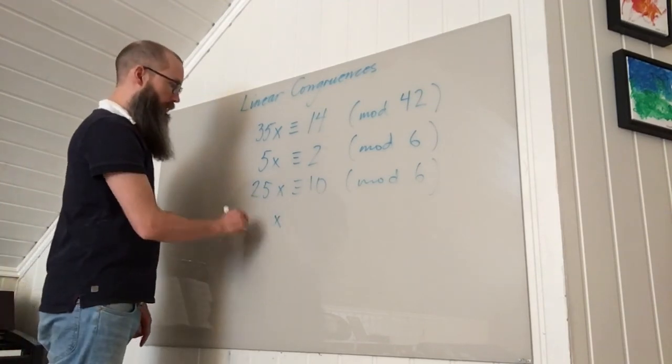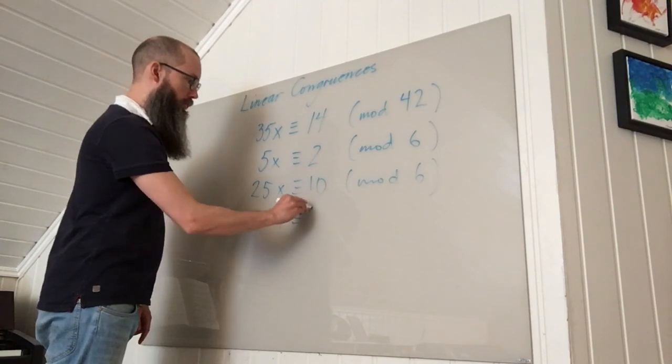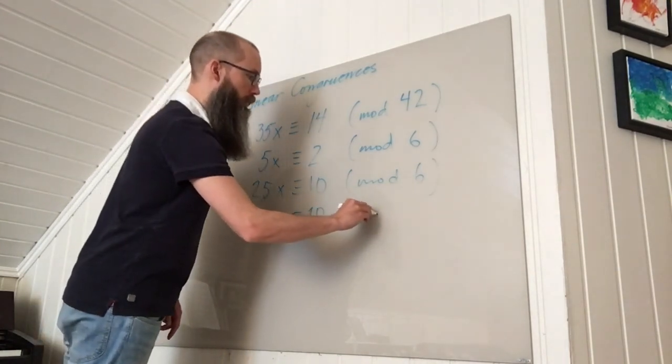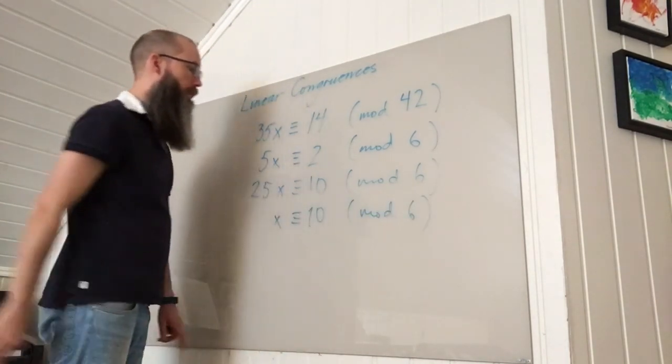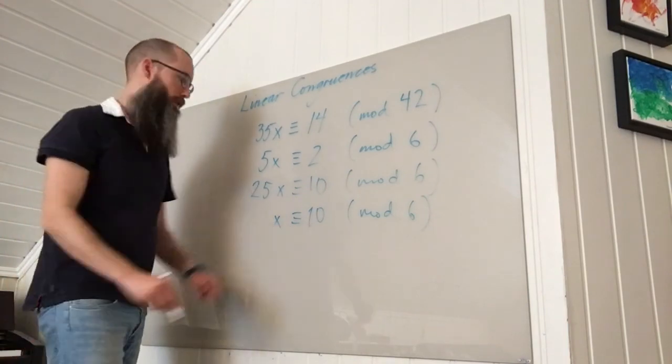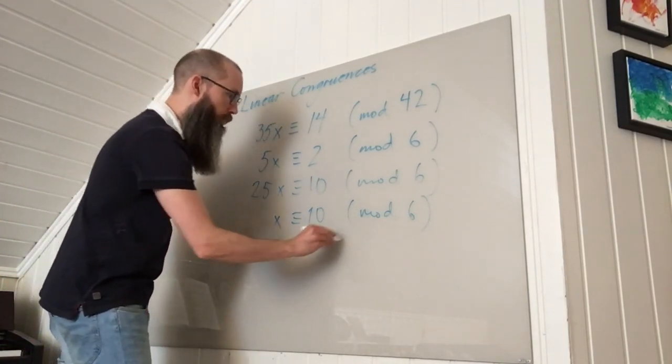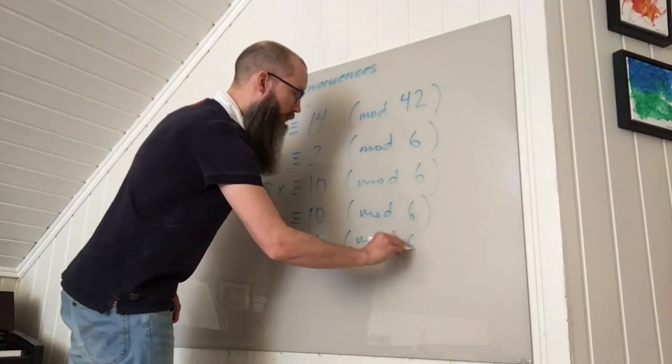So this is actually congruent to x. So x is congruent to 10 mod 6. Now 10 is congruent to 4 mod 6, so it's easier to write as x congruent to 4 mod 6.